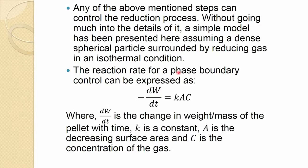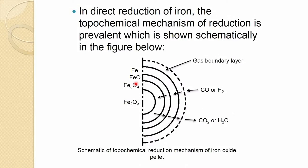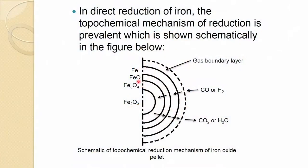Considering isothermal conditions and phase boundary control, the reaction rate can be expressed as the weight loss with time: −dw/dt = k·A·C, where k is a constant, A is the decreasing surface area, and C is the concentration of the gas. This topochemical reduction mechanism is also known as the shrinking core model. In the shrinking core model, the interface shrinks inward while we assume the pellet outer size remains the same but becomes porous.